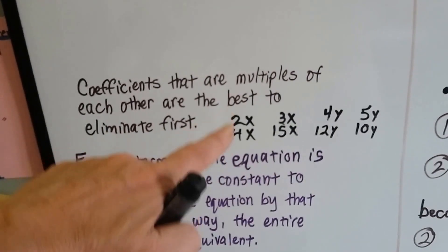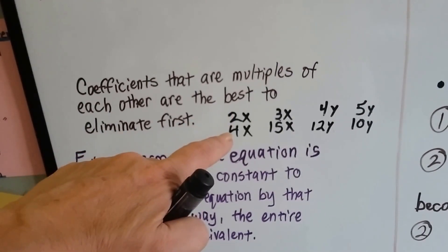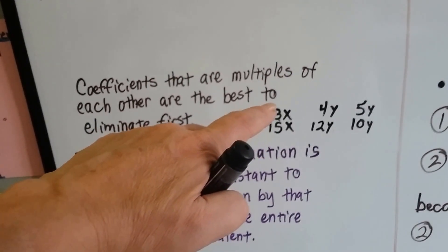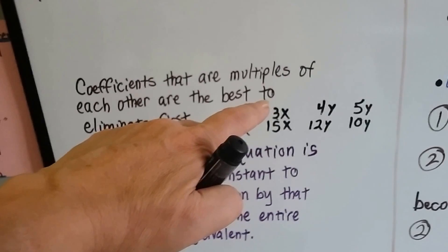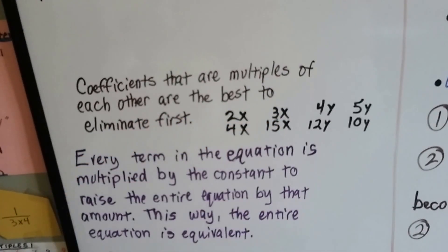If we multiply this equation by a 2, that will bring that 2x up to a 4x. If we multiply this equation that has the 3x by a 5, that will bring it up to the 15x for that equation.